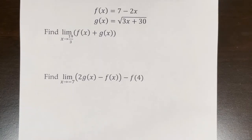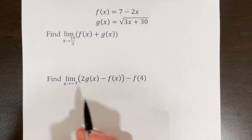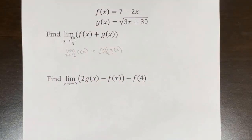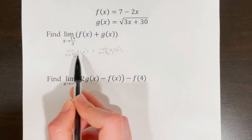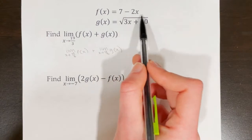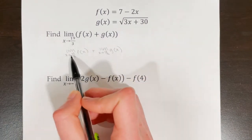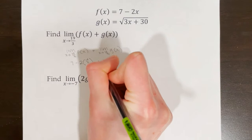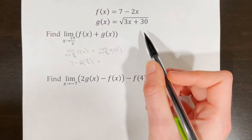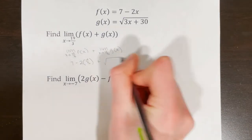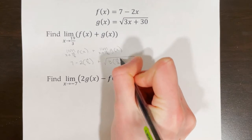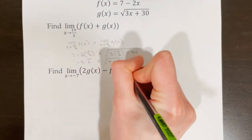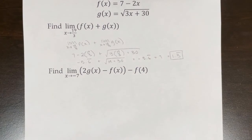This example is very similar, but instead of being given a graph, we're given the actual functions. First I'll split it apart, then evaluate each limit. Since these are continuous functions, I can use direct substitution and plug in 19/3 directly. So f(x) becomes 7 minus 2 times 19/3, and for g(x) I also plug in 19/3. After simplifying, my answer is 1.3 repeating.